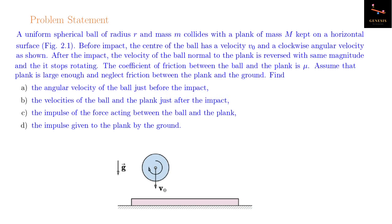A uniform spherical ball of radius r and mass m collides with the plank of mass capital M kept on a horizontal surface. Before impact, the center of the ball has a velocity v-naught and a clockwise angular velocity as shown. After the impact, the velocity of the ball normal to the plank is reversed with the same magnitude and it stops rotating. The coefficient of friction between the ball and the plank is mu. Assume that the plank is large enough and neglect friction between the plank and the ground. Find part A: the angular velocity of the ball just before the impact.